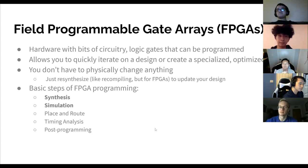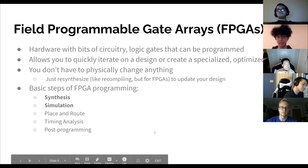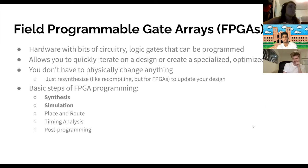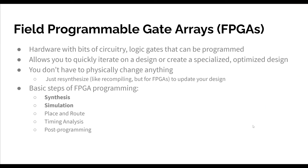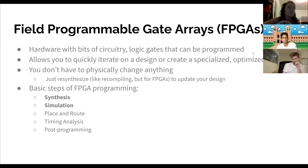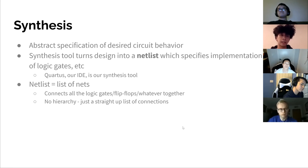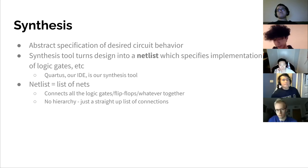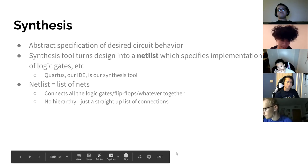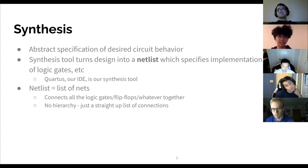Every time you need to change it, you just re-synthesize your design, which is basically like recompiling in a regular computer program. There are five basic steps of FPGA programming. The first step is synthesis — that's when you specify your design using Verilog and actually code out your design. Your synthesis tool turns your design into a net list, which is going to be used later to actually realize the design in the FPGA. The net list is literally a list of every single logic gate and everything it's connected to — no hierarchy.